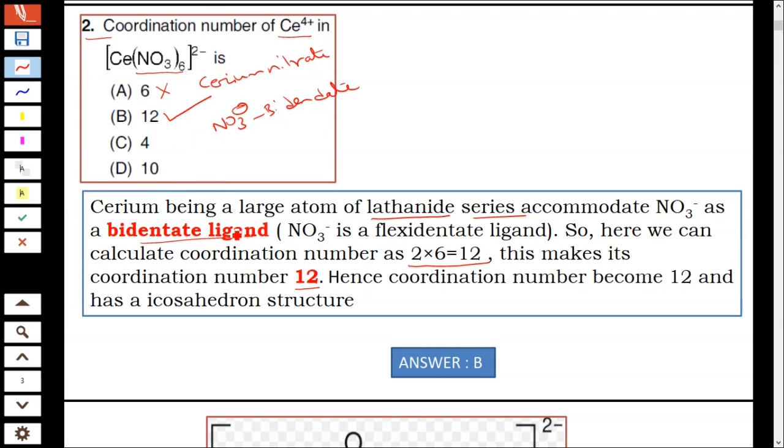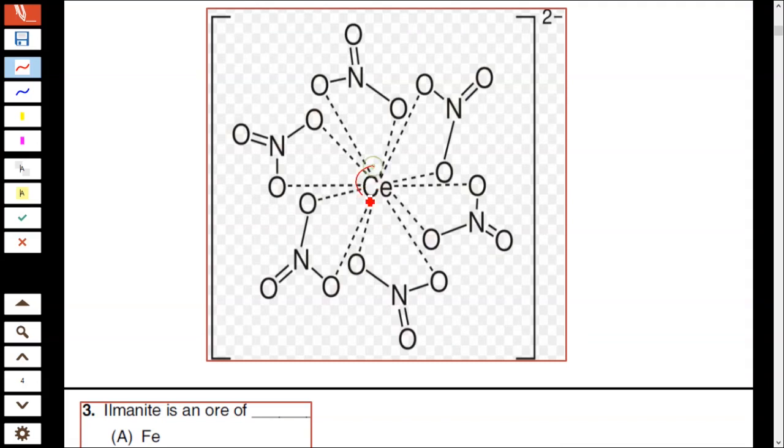Hence coordination 12 is the right answer, option B is correct. See this is the structure of cerium nitrate. Each NO₃⁻ donates 2 electrons coordinated with cerium. It's a 12-coordinated complex, coordination number is 12.